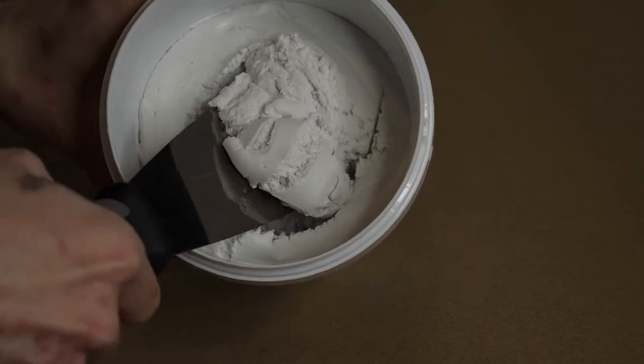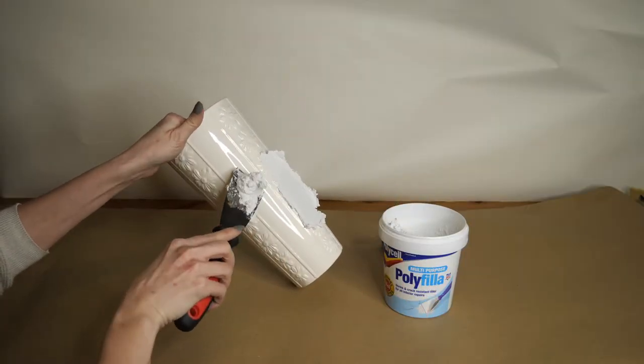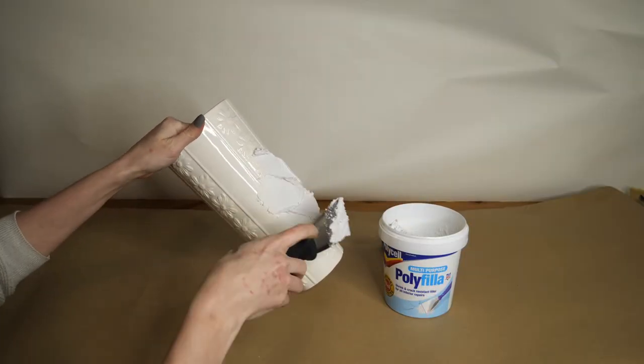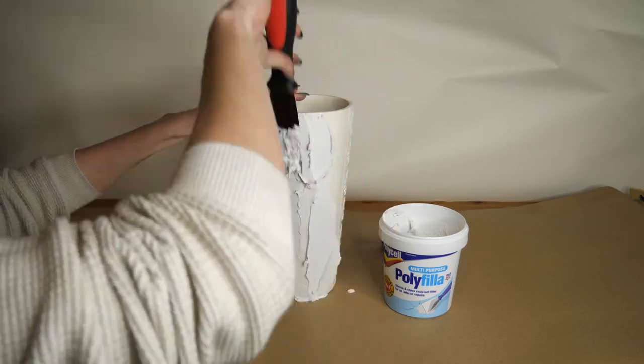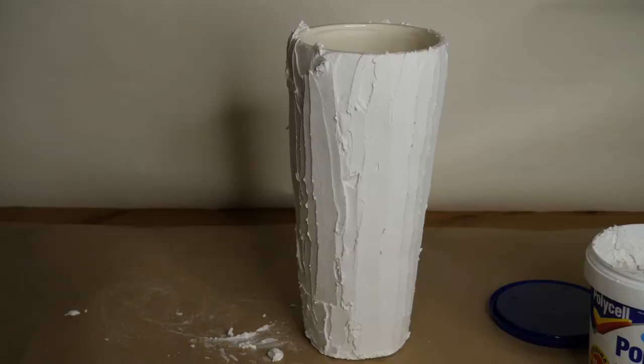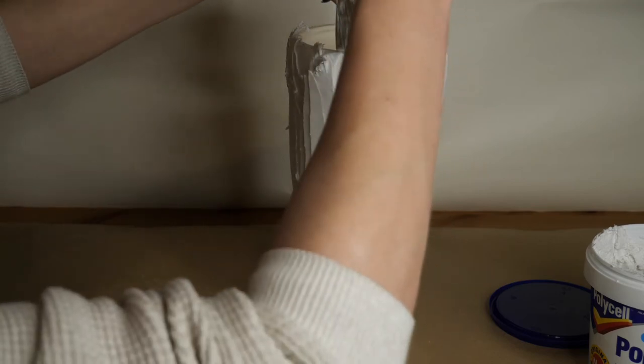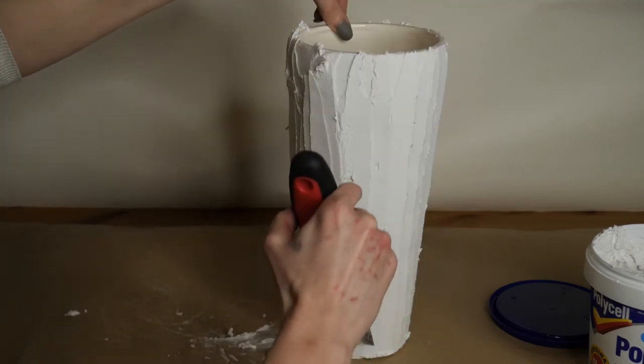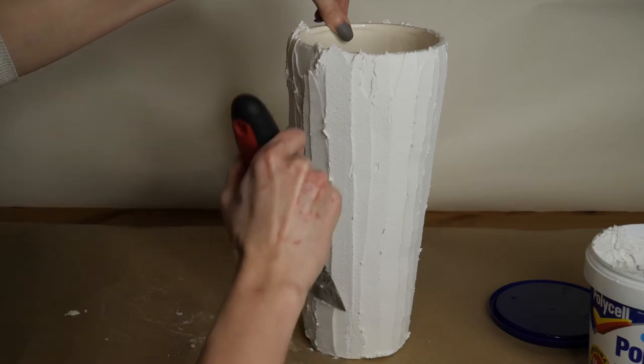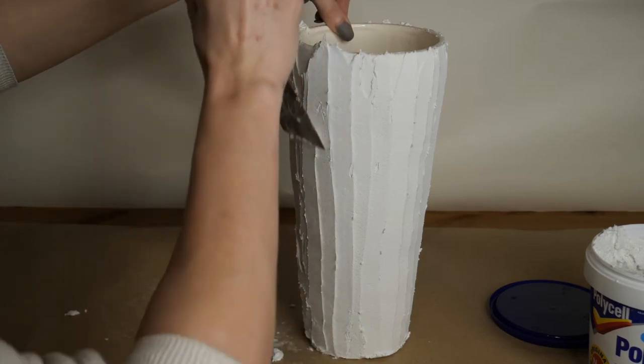I started by applying a thin coat sporadically all over the pot, mostly just trying to cover up the horrible floral pattern. Once I had this on all over, I really didn't like the random texture, and so I decided to change it into this vertical pattern instead by running lines from the bottom all the way to the top.